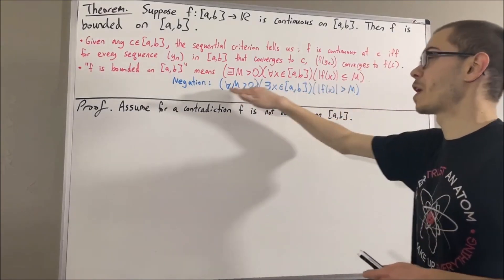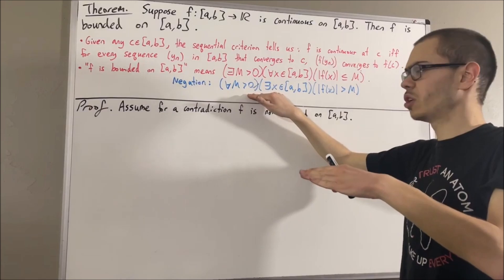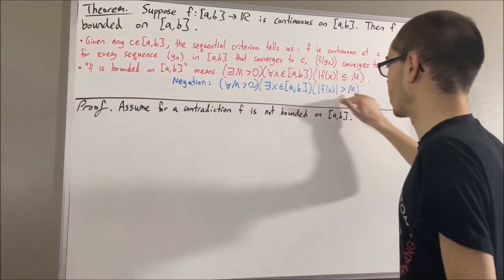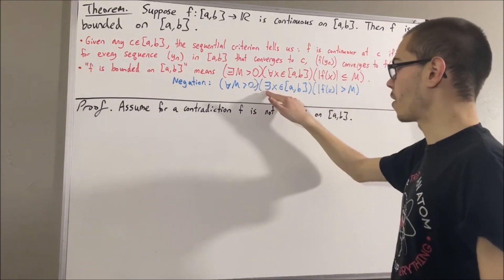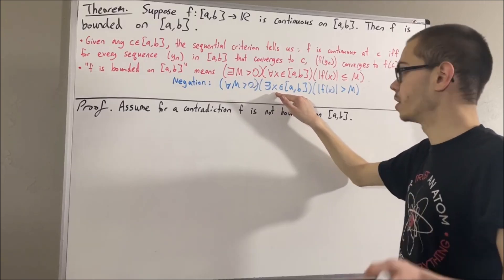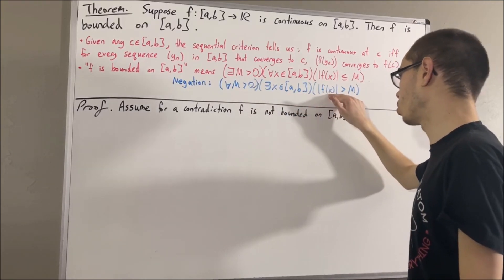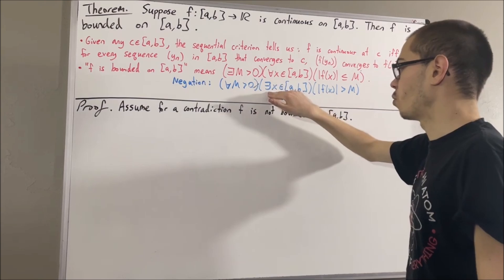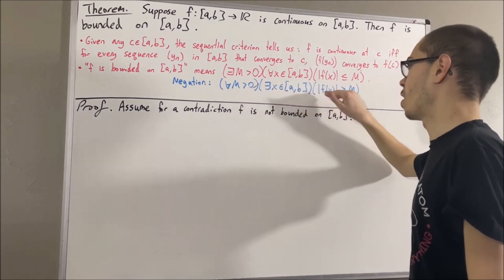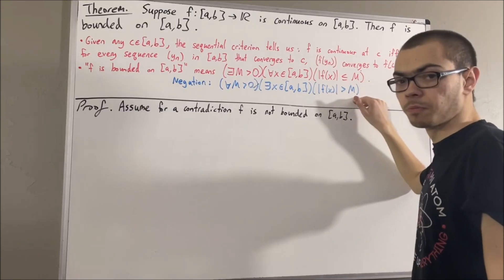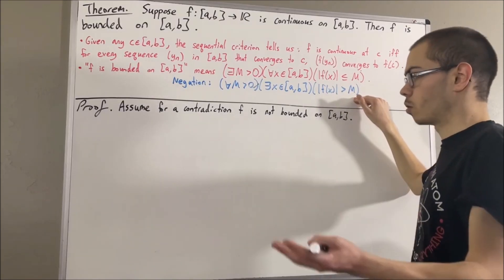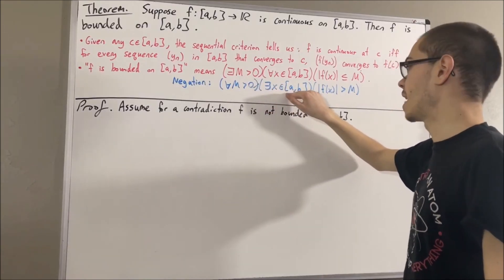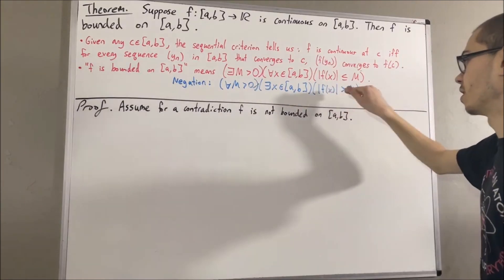The negation of the boundedness statement is: for all positive real numbers capital M, there exists an element x in a, b such that the absolute value of f(x) is greater than capital M. This statement works for every positive real number, so we're going to apply it to each positive integer. Applying it to 1: there exists x1 in a, b such that |f(x1)| > 1. Applying it to 2: there exists x2 in a, b such that |f(x2)| > 2. In general, for positive integer n, there exists xn in a, b such that |f(xn)| > n.